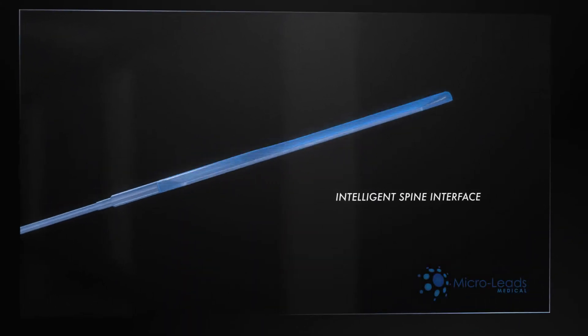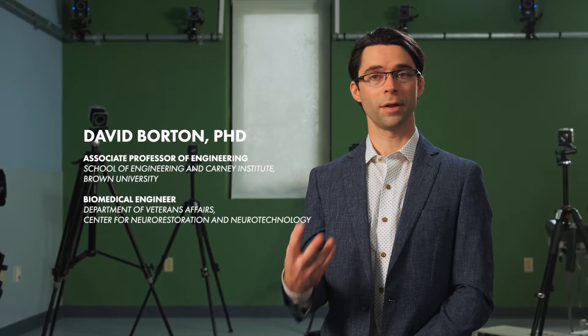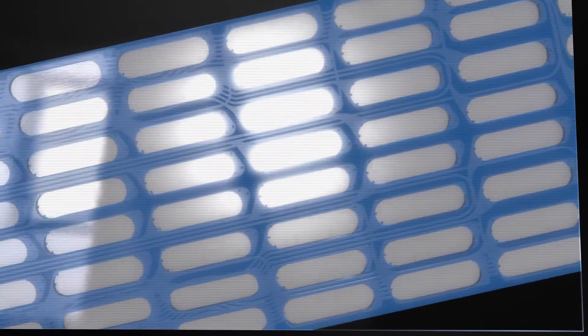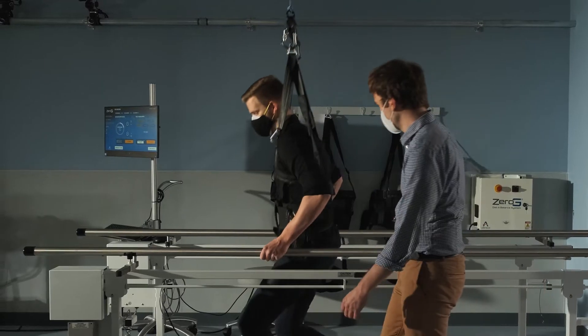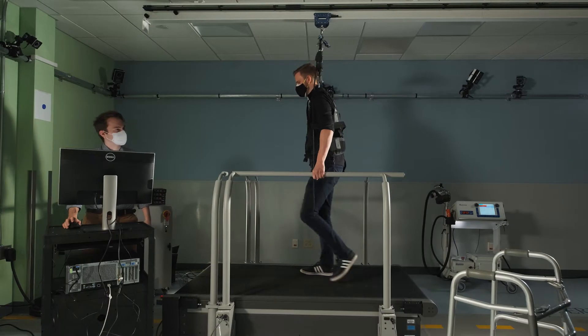The Intelligent Spine Interface, or ISI, is the fusion between neurotechnology and spinal cord neuroscience. It's a spinal cord machine interface that we're developing to allow us to help patients with spinal cord injury. The hope is that it enables them to walk and to use different body functions again.